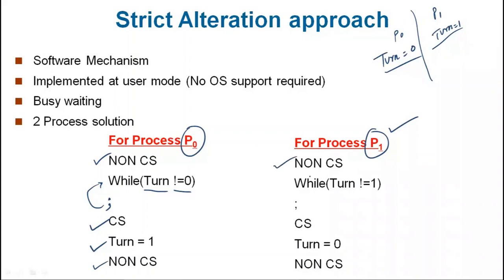Then P1 checks: while turn is not equal to 1, it will keep checking the same condition. When turn value is 1, it will enter the critical section and execute it. When the critical section execution is finished, it will pass the baton — setting turn equal to 0.